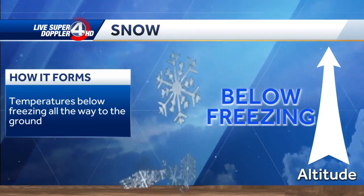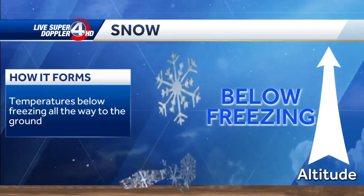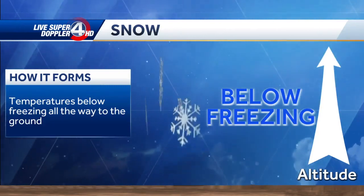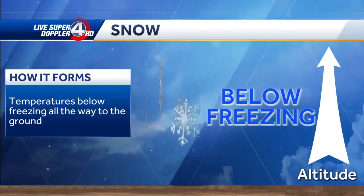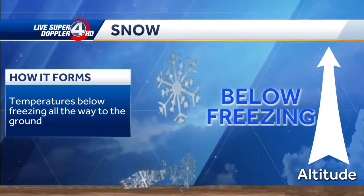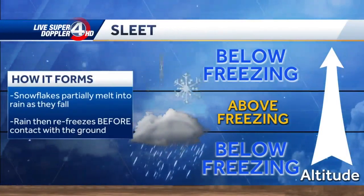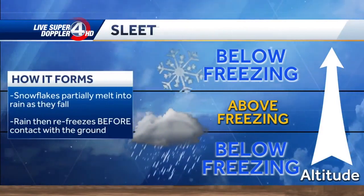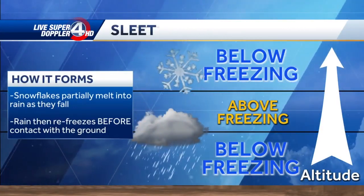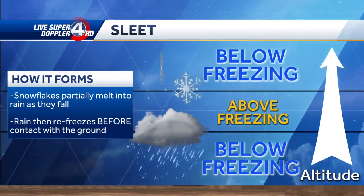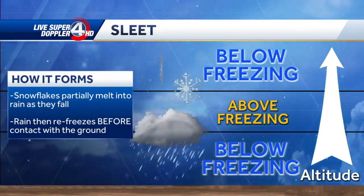Sleet is a little bit different in that we normally get a layer of air just above the surface that's above freezing, and then below that the temperatures are below freezing. So when that happens, snowflakes will melt partially before they hit the surface and then refreeze back into ice pellets.